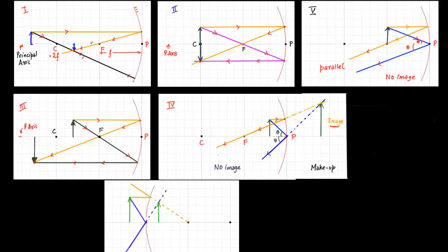We now talk about convex mirrors. In a convex mirror, the center of curvature and focus are behind the mirror, and the pole is at the surface. There is essentially one general case — the object is placed in front of the mirror. The first ray, in orange, strikes the mirror and diverges; if you trace back its path, it appears to come from the focus behind the mirror.